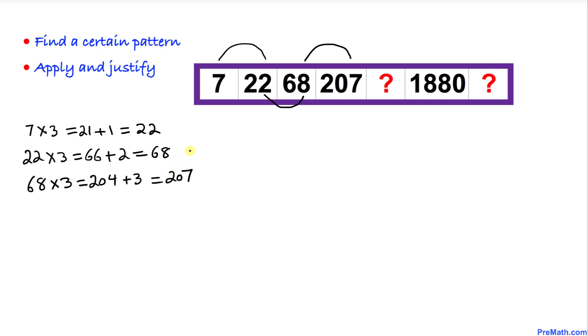And now we can see a clear pattern that we are not only multiplying by 3, but we are adding these numbers 1, 2, 3. So the next number we're going to be adding 4, and then 5 and 6, and on and on.